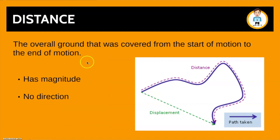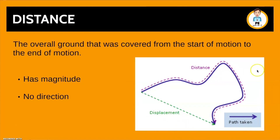First up we have distance, which is the overall ground covered from the start of the motion to the end of the motion. It has magnitude or quantity, but no direction. Using this image, the start point is here and the end point is here. The purple path goes all the way up and then finishes down — let's say that's about 100 metres.